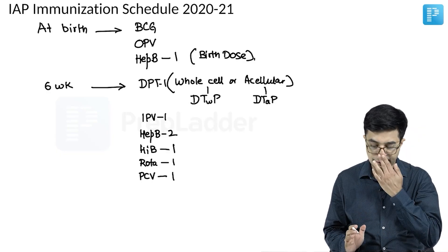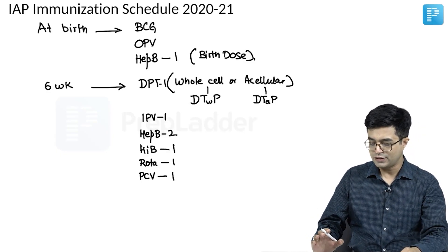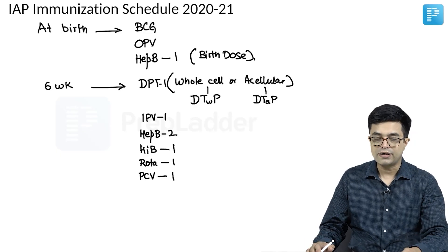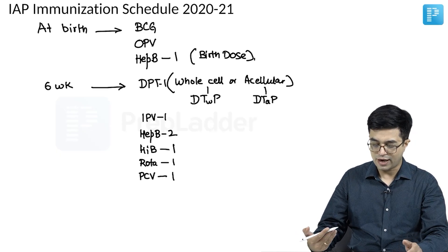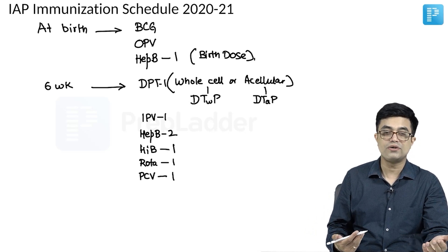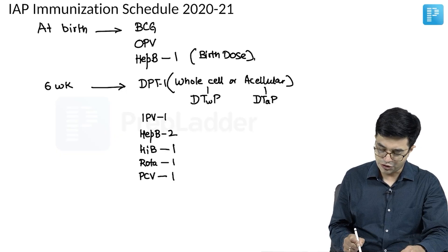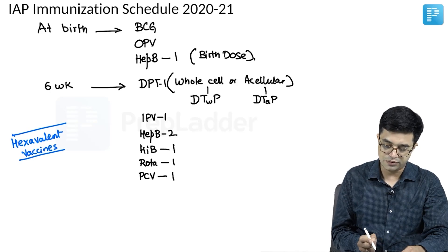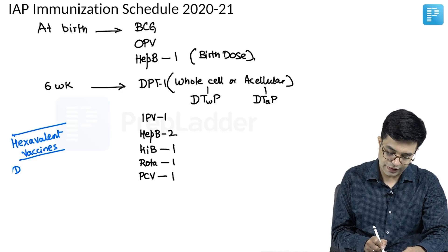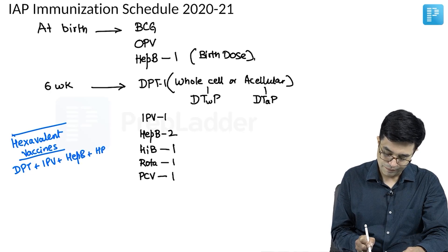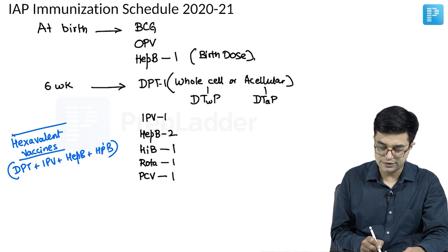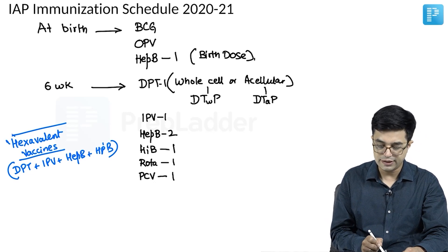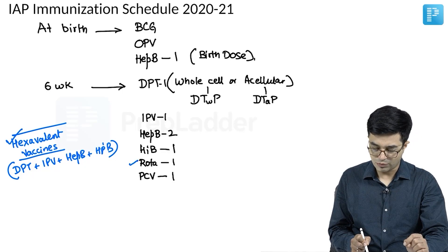What are the differences here? DPT1, IPV1, and hepatitis B2 are all mentioned separately. In practice, the IAP schedule says you can use either all of them singularly — which is practically not feasible because the number of vaccines would be very high — or you can use hexavalent vaccines, which are available. These hexavalent vaccines are costly but easier to administer, as they usually contain DPT along with IPV, hepatitis B, and HIB — covering six diseases inside a single hexavalent vaccine. In addition, you give rotavirus 1 and PCV1.